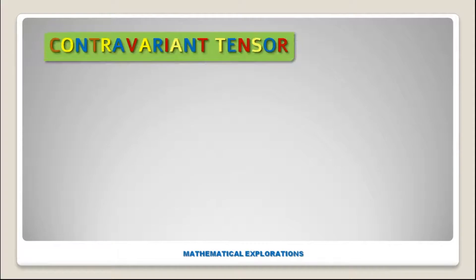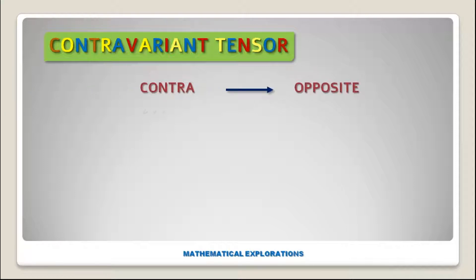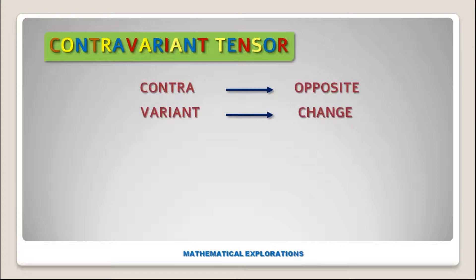Hello everyone, welcome to Mathematical Explorations. In this video we are going to discuss about contravariant tensors. Contra means opposite and variant means change, that means the change is opposite — when one increases the other decreases, or one decreases and the other increases.